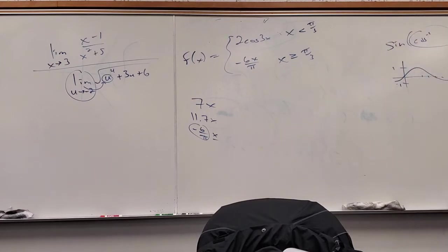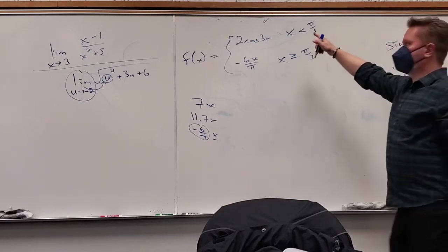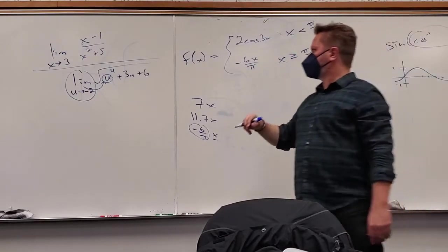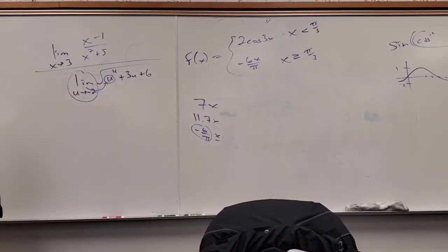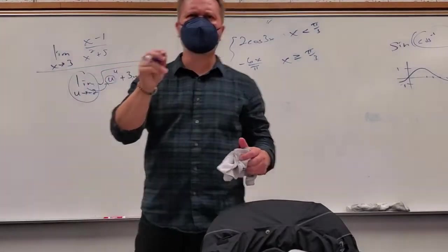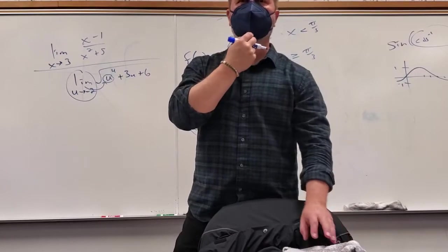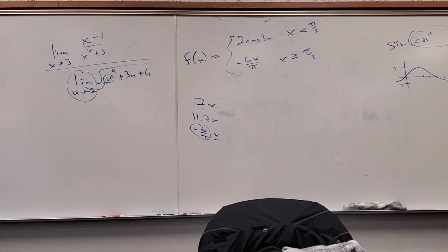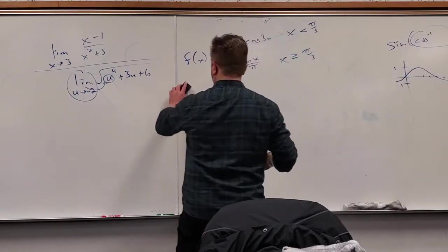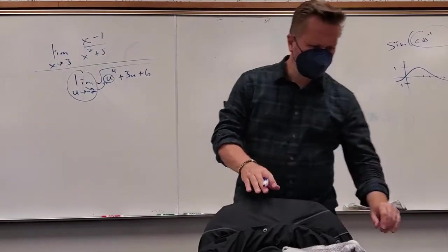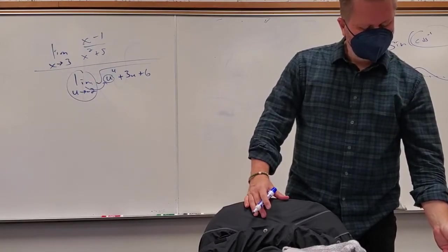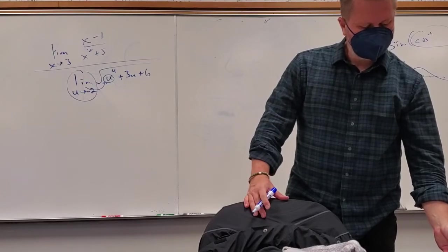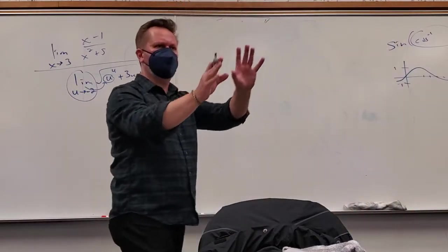A student asks: do you have to prove continuity before plugging in a value? The key rule is: you're only allowed to directly substitute a number into a limit if the function is continuous at that number. For polynomial and rational functions (with nonzero denominator), this is straightforward — you don't need to write it out. If you plug in and get an actual value like 7/2, it's obviously continuous.